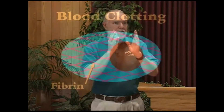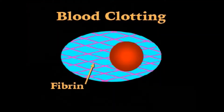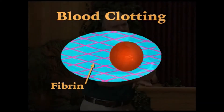Except for the blood clotting system. What happens is remarkable: you have a substance called fibrin that gets together with other molecules of fibrin and makes a web across the blood vessel. That web is so tight that blood cells can't pass through it, and that's what produces your clot.